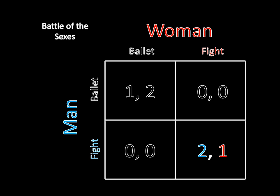Likewise, if they both agreed to go to the fight earlier that day, if the man randomly switches to the ballet he's going to be worse off — getting nothing instead of two. And the woman won't want to switch either, because if she goes to the ballet the man won't be there. So she'll keep going to the fight as expected. But without communication, it's not clear how they'll meet up, and they could easily end up in these bad mismatched outcomes that are worse for both.